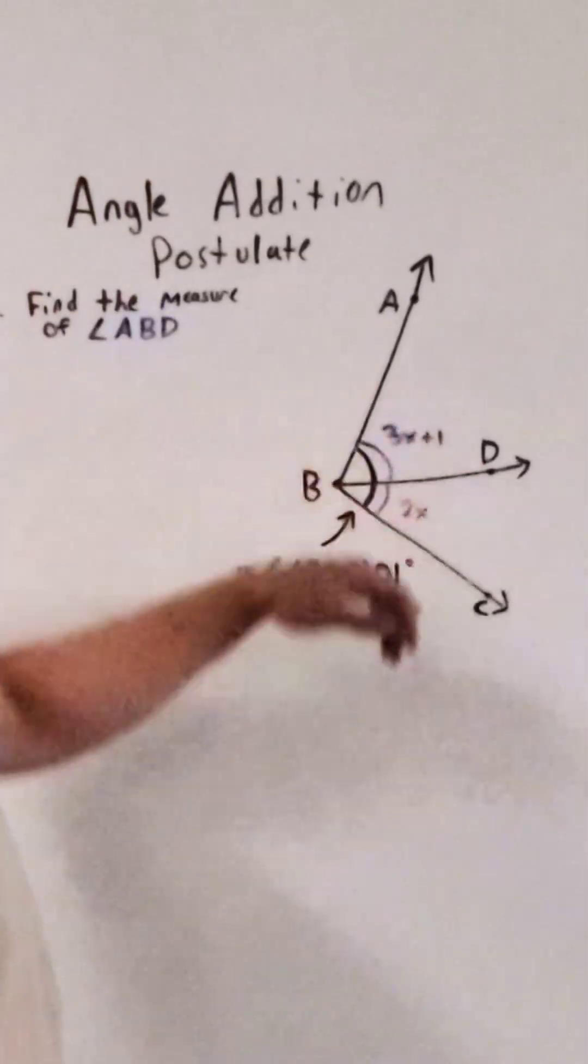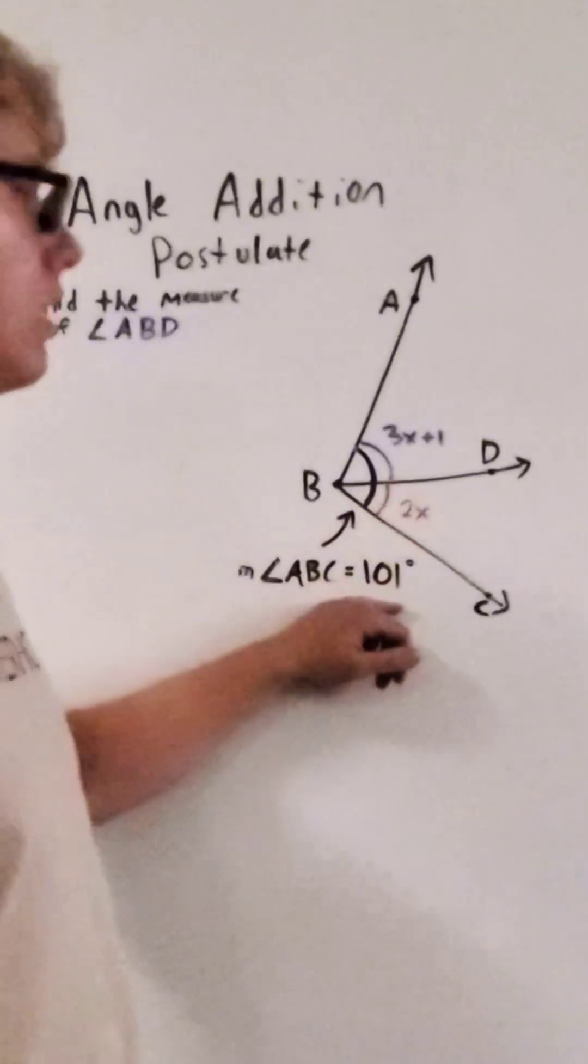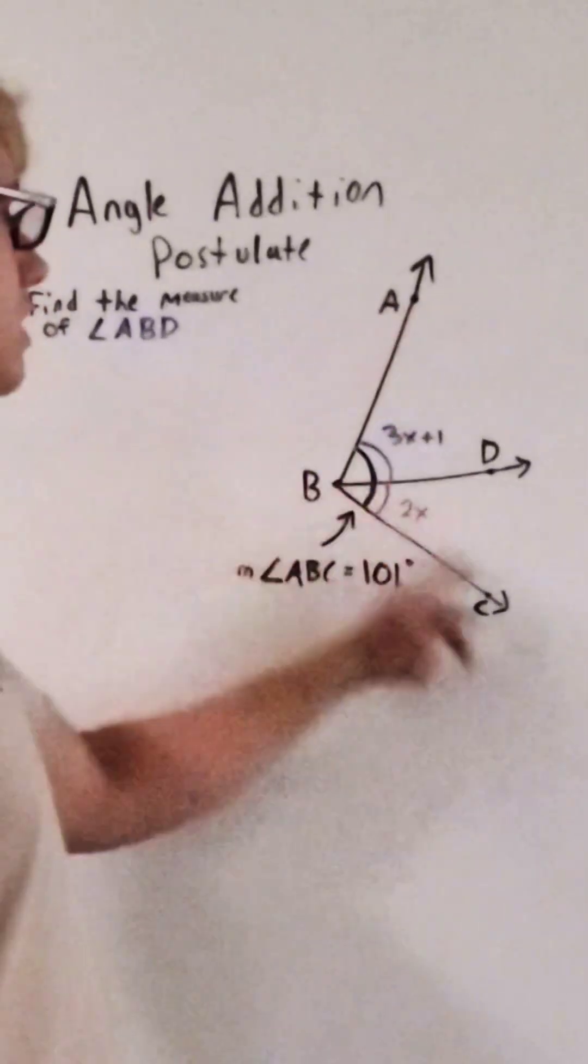So we've got three different angles here. This 101 degrees is the entire thing, angle ABC.